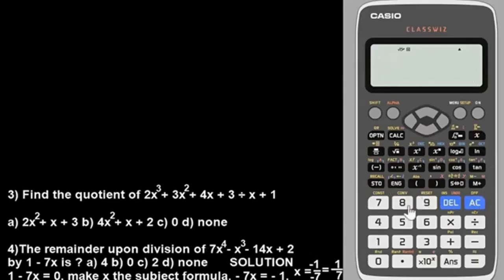We have 7x raised to power 4 minus x raised to power 3 minus 14x plus 2. That's it. Now once you are done, press equals and you see your answer. The answer will be 0. The option is option B. The answer is 0.